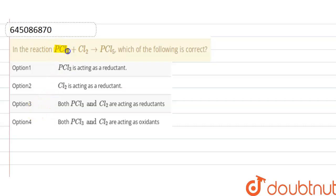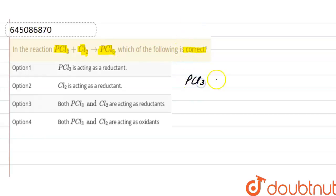The question is: in the reaction PCl₃ + Cl₂ → PCl₅, which of the following is correct? Here the reaction is PCl₃ plus Cl₂ giving rise to PCl₅.